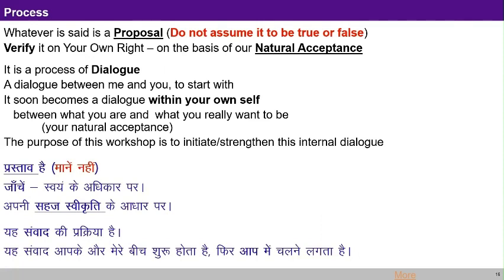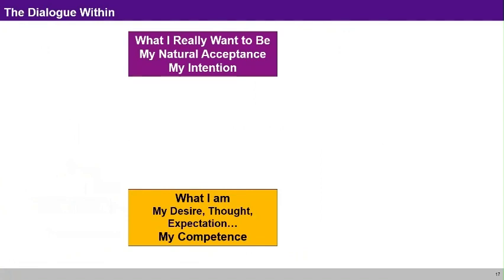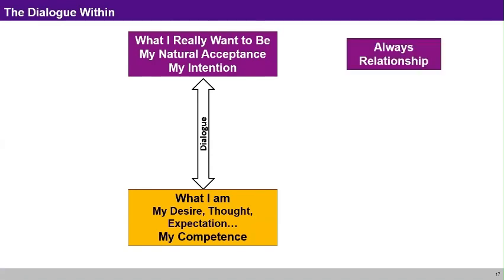If you look at that dialogue within, it is a dialogue between what I really want to be — what is my natural acceptance, what is my intention — and what I am: my desire, my thought, my expectation, and that is my competence. So, this is basically initiating this dialogue between what I really want to be and what I am — between my natural acceptance and the desire, thought, and expectation that I have.